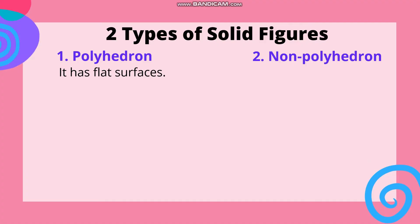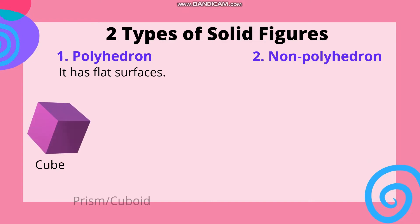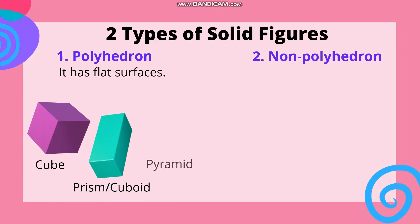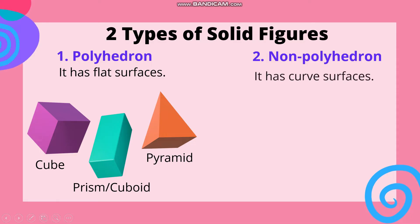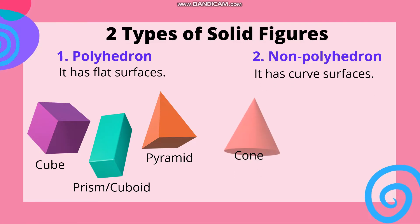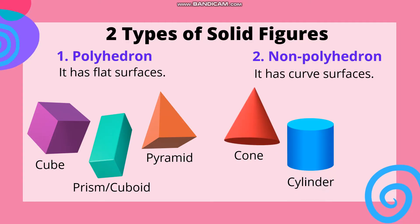Two types of solid figures: Number one — Polyhedron: it has flat surfaces. Examples include cube, prism or cuboid, and pyramid. Number two — Non-polyhedron: it has curved surfaces. Examples include cone, cylinder, and sphere.